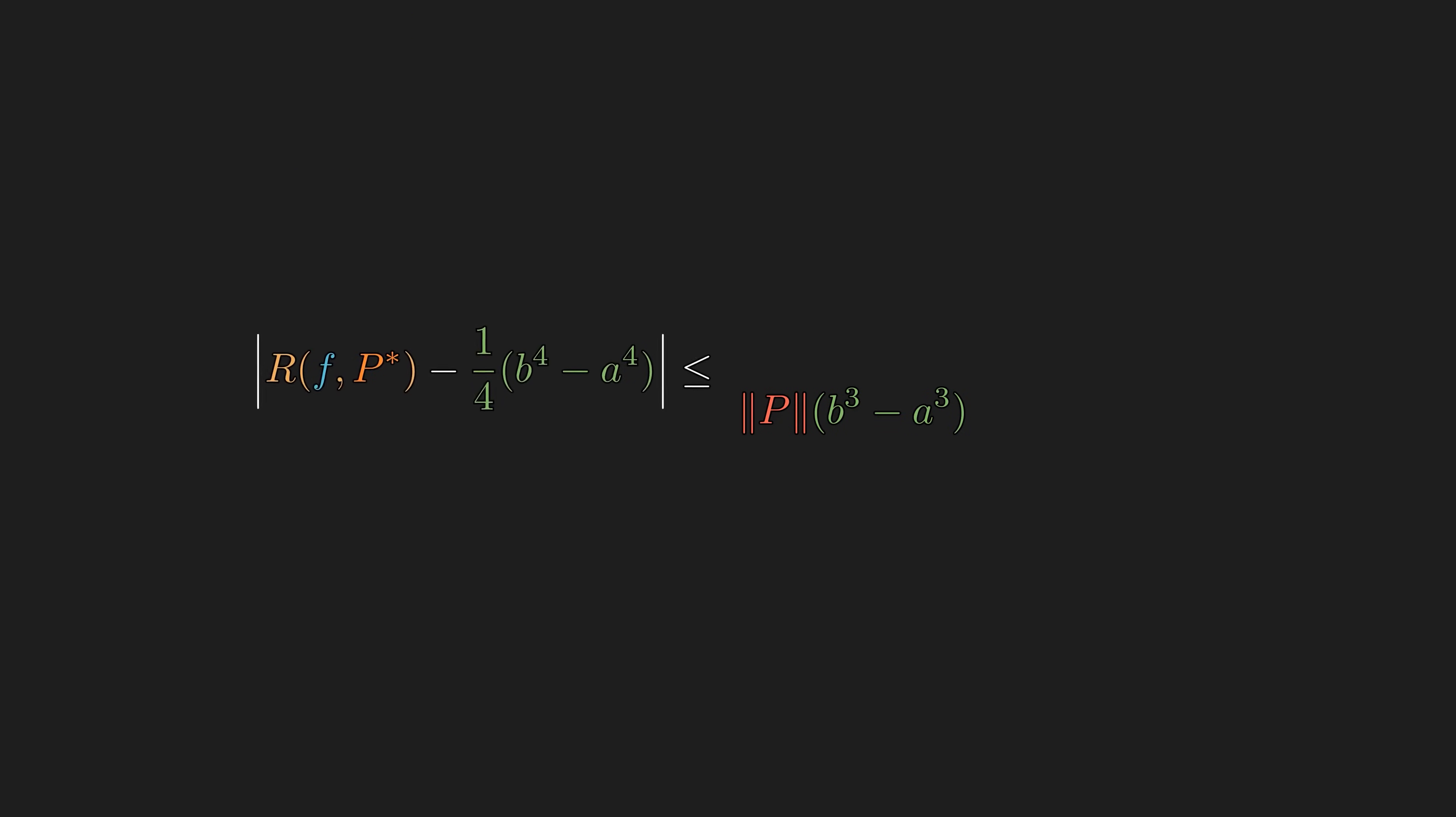We started from the difference between the generalized Riemann sum and the supposed limit, and we have a reasonable upper bound on this expression. If we take the limit as the norm of the partition goes to zero, the right expression goes to zero. Since the absolute value is always greater than or equal to zero, the original expression must also go to zero. This proves that the function x cubed is indeed Riemann integrable from a to b using the definition.